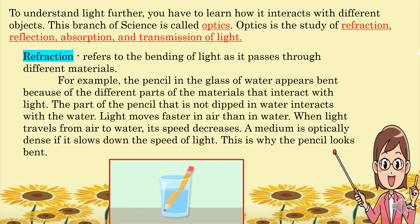Refraction refers to the bending of light as it passes through different materials. For example, the pencil in the glass of water appears bent because of the different parts of the materials that interact with light. Light moves faster in air than in water. When light travels from air to water, its speed decreases. A medium is optically dense if it slows down the speed of light. This is why the pencil looks bent.